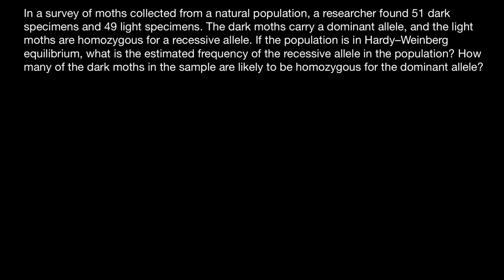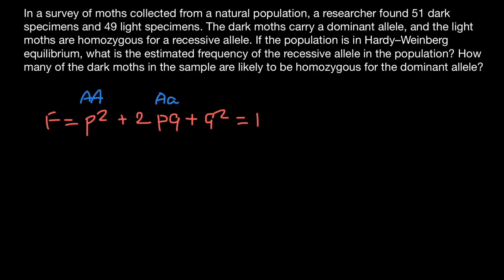In order to solve this problem, all we need to know is Hardy-Weinberg equilibrium, where the frequency of the three genotypes made by two alleles in a population equals p² + 2pq + q², and all this equals 1 or 100%. Using capital A and small a to designate dominant and recessive alleles: p² stands for the homozygous dominant genotype, 2pq stands for the heterozygous genotype, and q² stands for the homozygous recessive genotype.